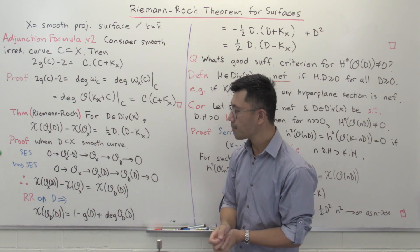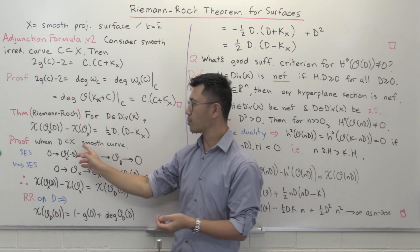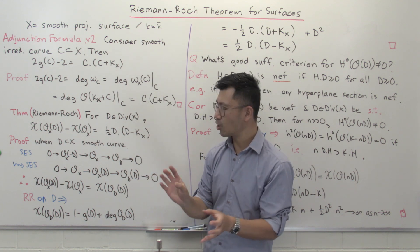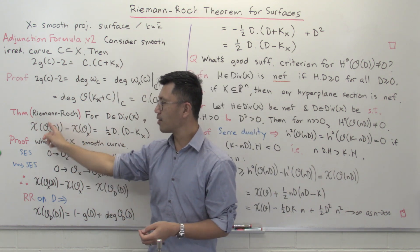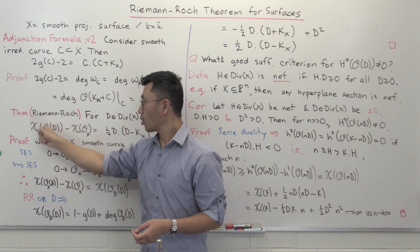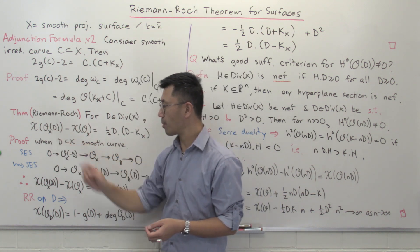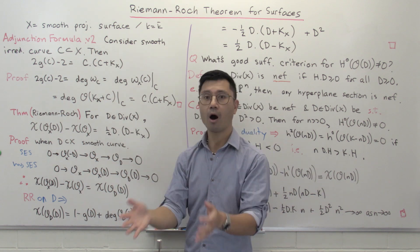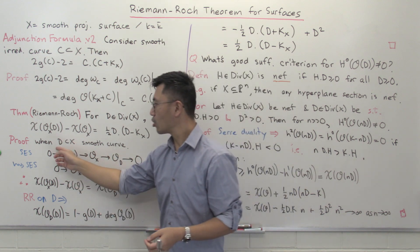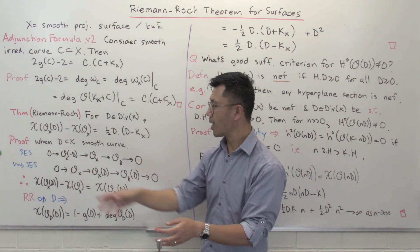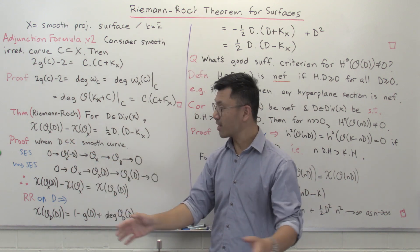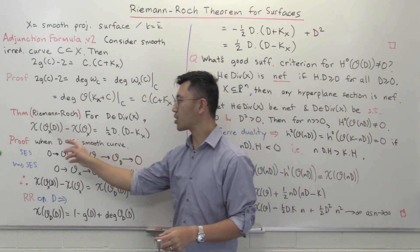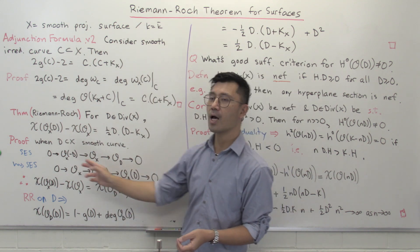I'll prove this in the special case where D is a smooth curve, without complete detail but covering most steps. This isn't a big restriction because the quantity only depends on the linear equivalence class of D, since it's the chi of a line bundle. In general, you can write any divisor as the difference of two effective divisors, and using Bertini's theorem you can make those effective divisors smooth curves, then apply the result to each.